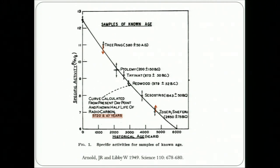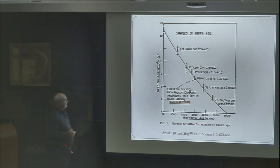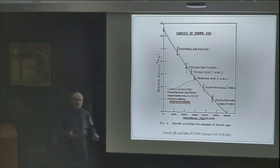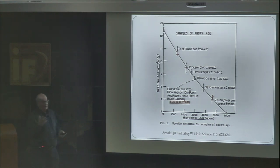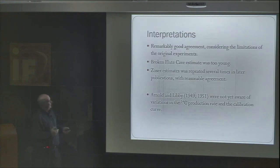We then put our new data on Libby's old plot. We found that the sample which was too high before now plots on the line, and Djoser's original first sample plots slightly higher but more or less where Libby showed it. The conclusion is basically that Libby was right — his measurements were incredibly accurate. If we take the same samples today, we get the same results, which is amazing given that it involves three or four generations of technology and a totally different way of measuring — counting the atoms instead of counting the beta decays.